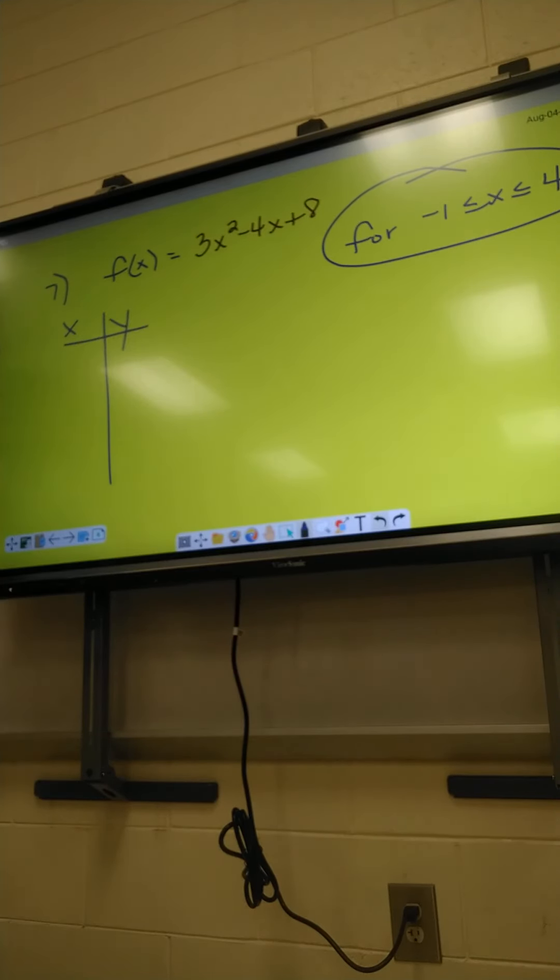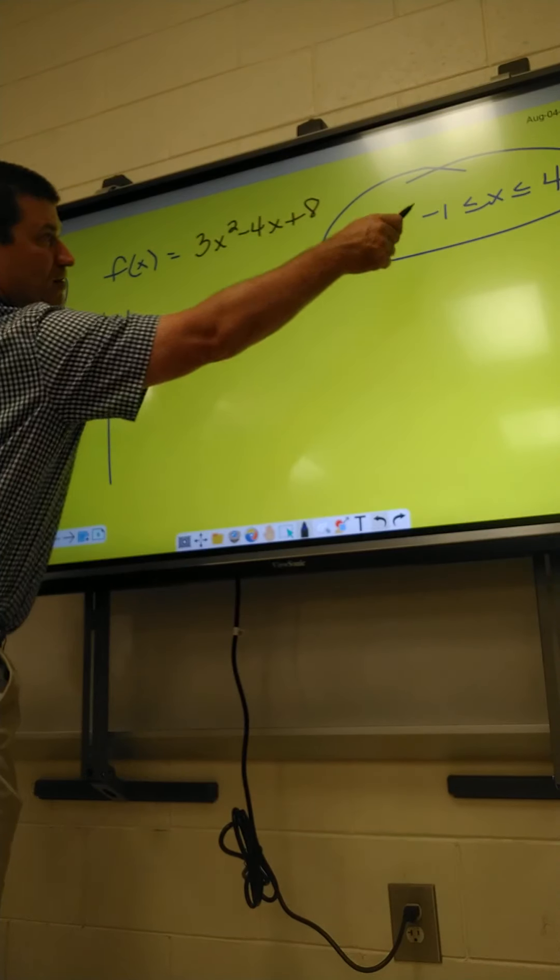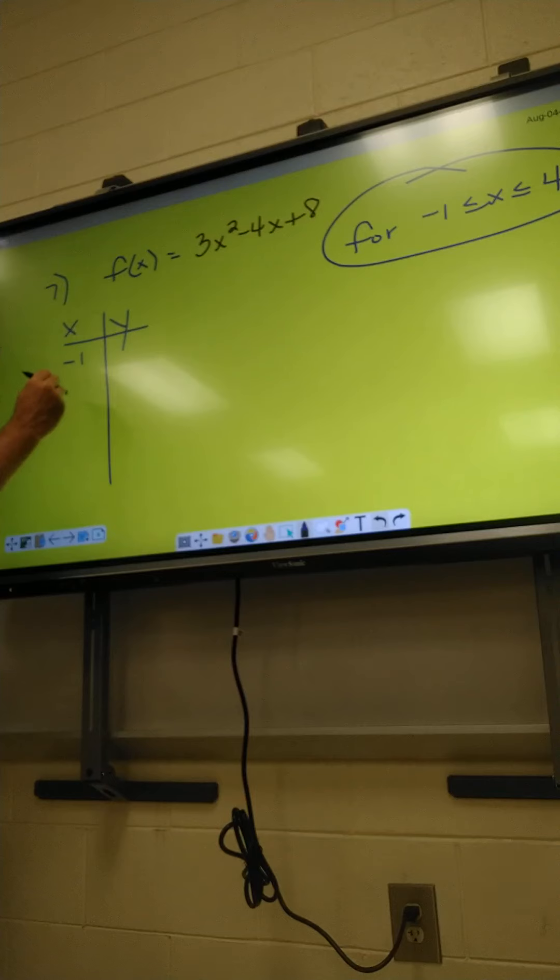Y'all draw an XY chart. Alright, they want us to start at negative 1 and go to 4. So, I got negative 1, next number 0, positive 1, 2, 3, 4. So, they want us to plug in those six numbers. Does everybody understand where I'm getting those six numbers from? It's going to show you what numbers right over here to plug in.